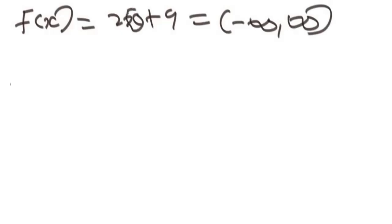We are given this linear function f of x equals 2x plus 9. So we know this function's domain is all numbers from negative infinity to positive infinity. A linear function is a function where the height of x is 1.